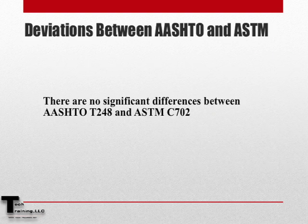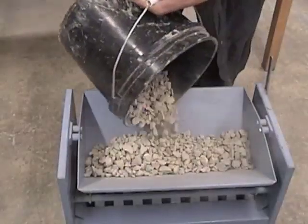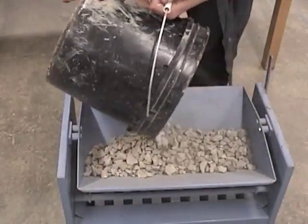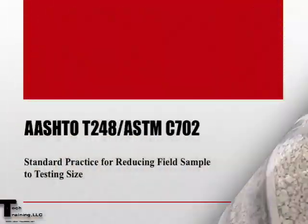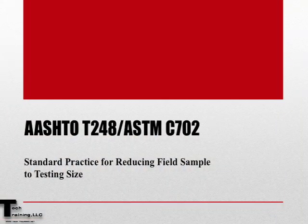There are no significant differences between AASHTO T248 and ASTM C702. This concludes AASHTO T248 and ASTM C702 Standard Practice for Reducing Field Samples to Testing Size.